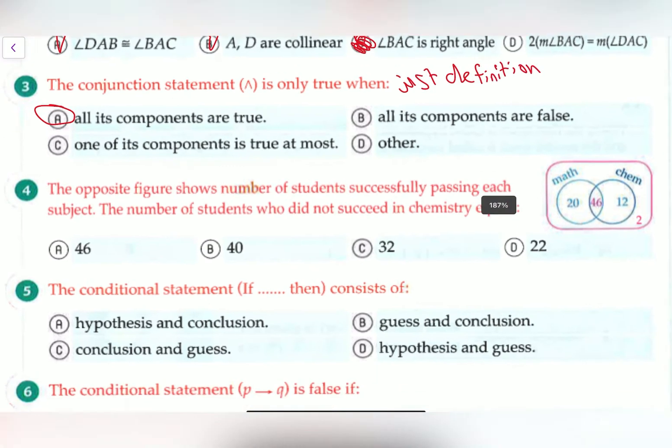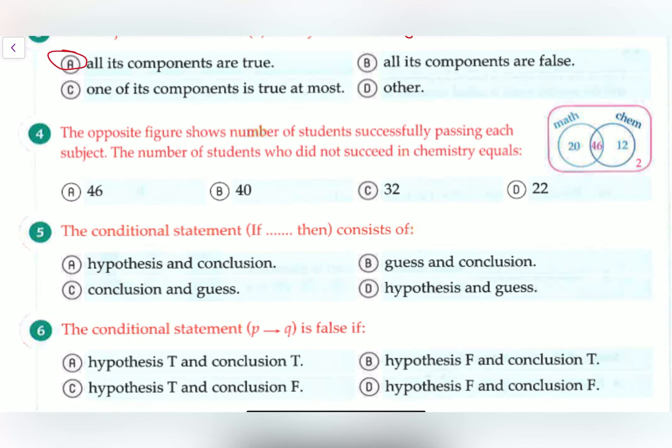It's just the definition. Okay, let's move on to question number 4. Question number 4 says the opposite figure shows number of students successfully passing each subject. The number of students who did not succeed chemistry equals. So what are we looking for? We're looking for the number of students that did not succeed chemistry. So this is pretty simple. The number of students who failed in chemistry or did not succeed is simply this added by this.